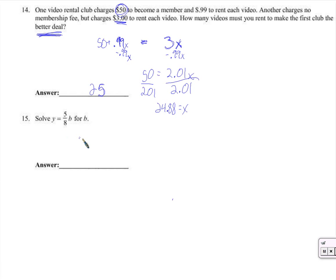Here we're solving for B — this is like number 3 where we had a fraction. What did we do? We multiplied by the reciprocal. No difference here, because the only thing I care about is getting B by itself. Over here, I have to multiply Y by 8 fifths — whatever happens, that's what needs to happen for B to be isolated. So B is equal to 8 fifths times Y. And that's it — that's the last one. Thank you for watching, and if you need any help just let me know. Have a good day.